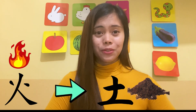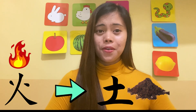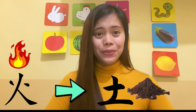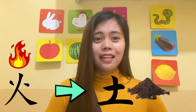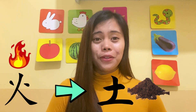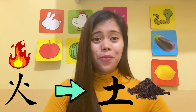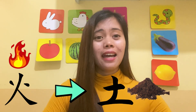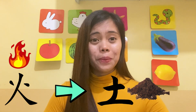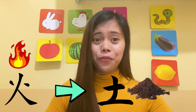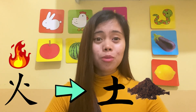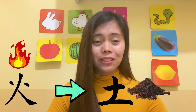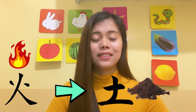Huo shang Tu — Fire produces earth, or soil. How does fire produce soil, you may ask? Well, if we burn wood and it produces fire, ashes will be the leftover or remains, and the ashes will be slowly absorbed back to the earth, or to the soil.